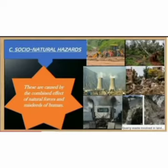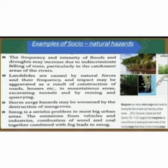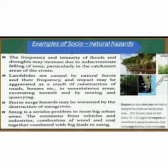Third, socio-natural hazards. These are caused by the combined effect of natural forces and misdeeds of humans. Examples include: the frequency and intensity of floods and droughts may increase due to indiscriminate felling of trees, particularly in the catchment areas of rivers — that is, areas of land bounded by watersheds. Landslides are caused by natural forces and their frequency and impact may be aggravated by construction of roads, houses, excavating tunnels, and mining and quarrying in mountainous areas.